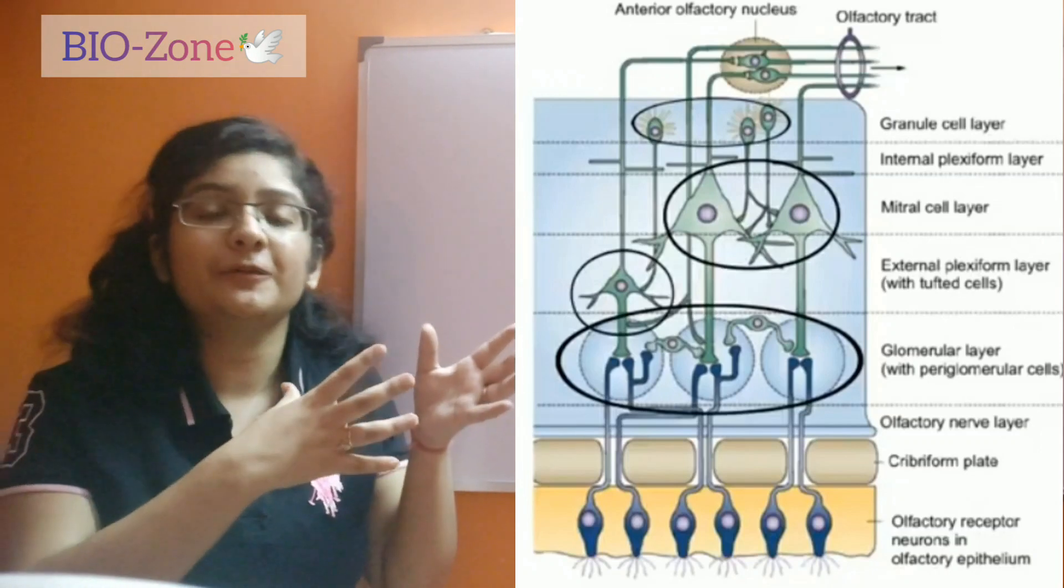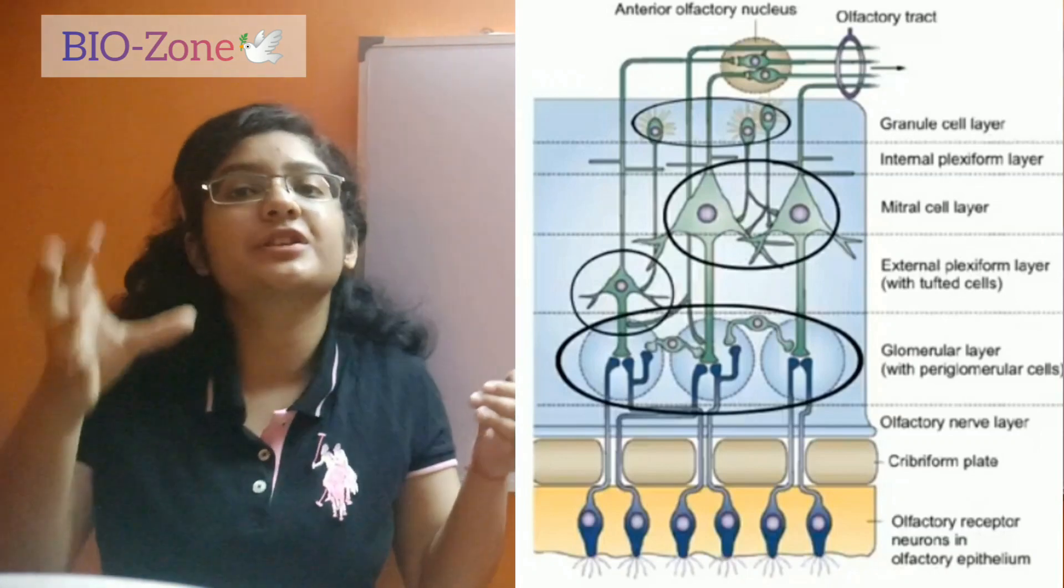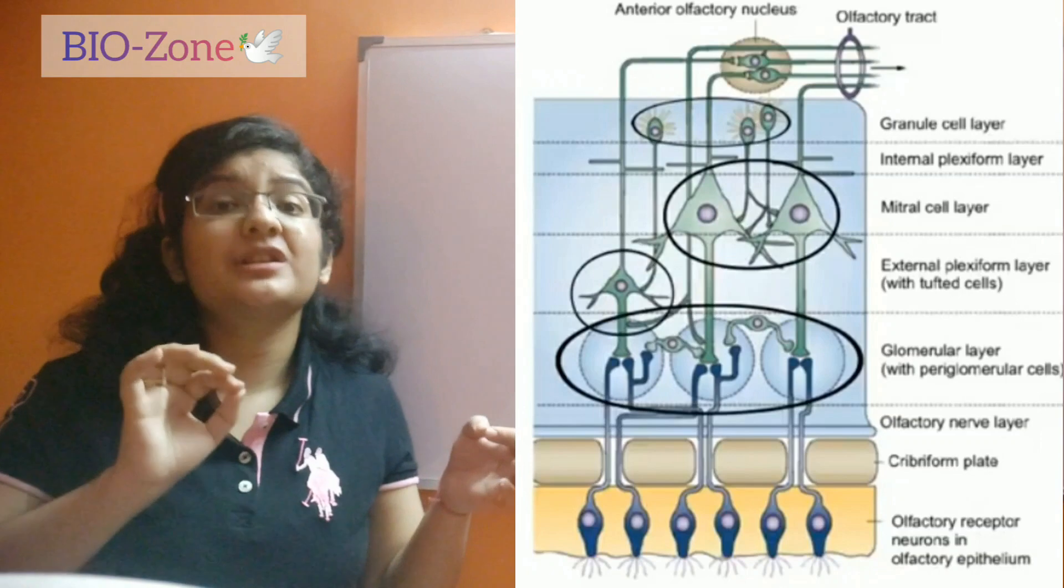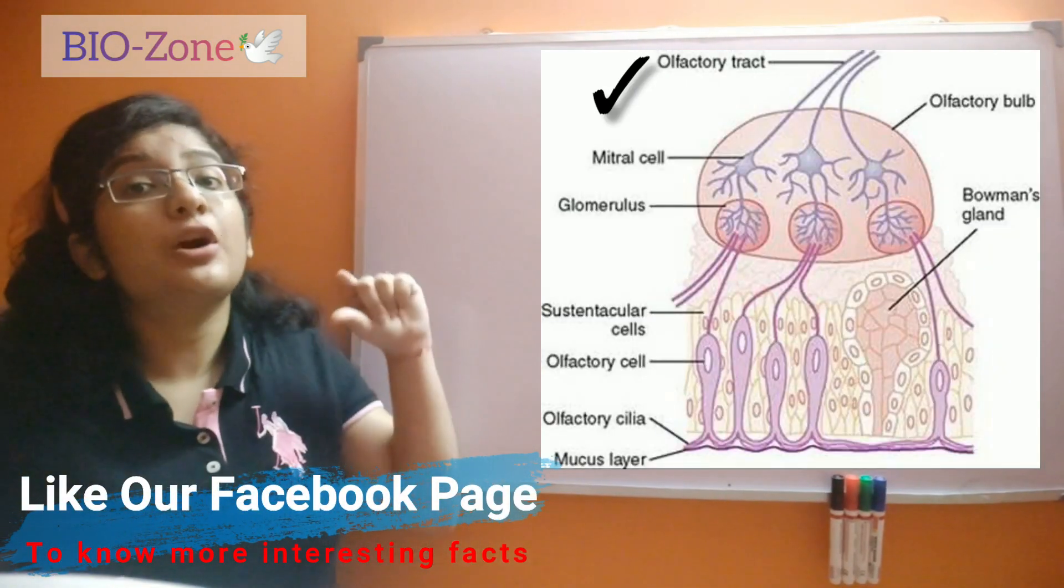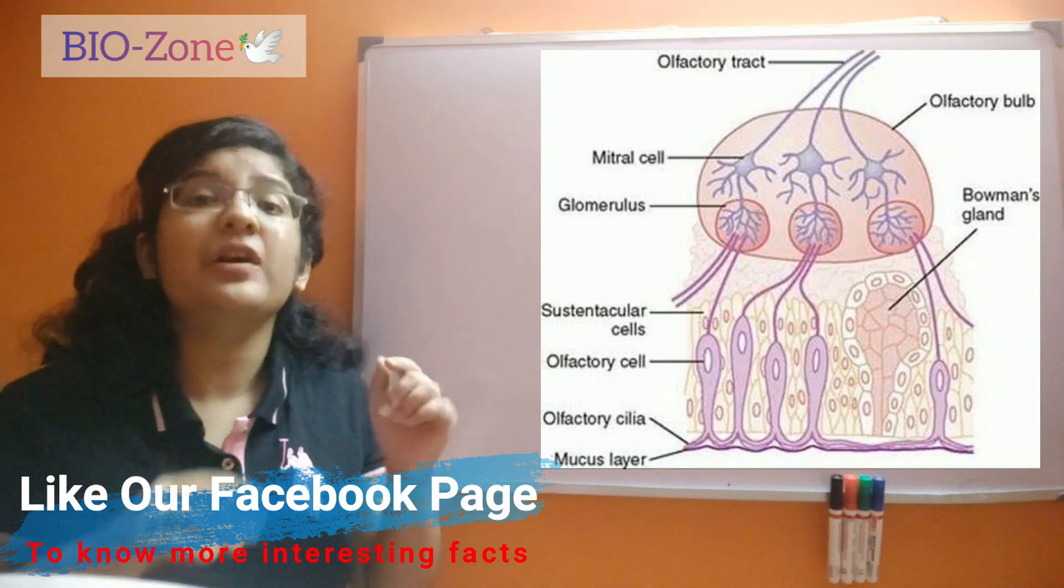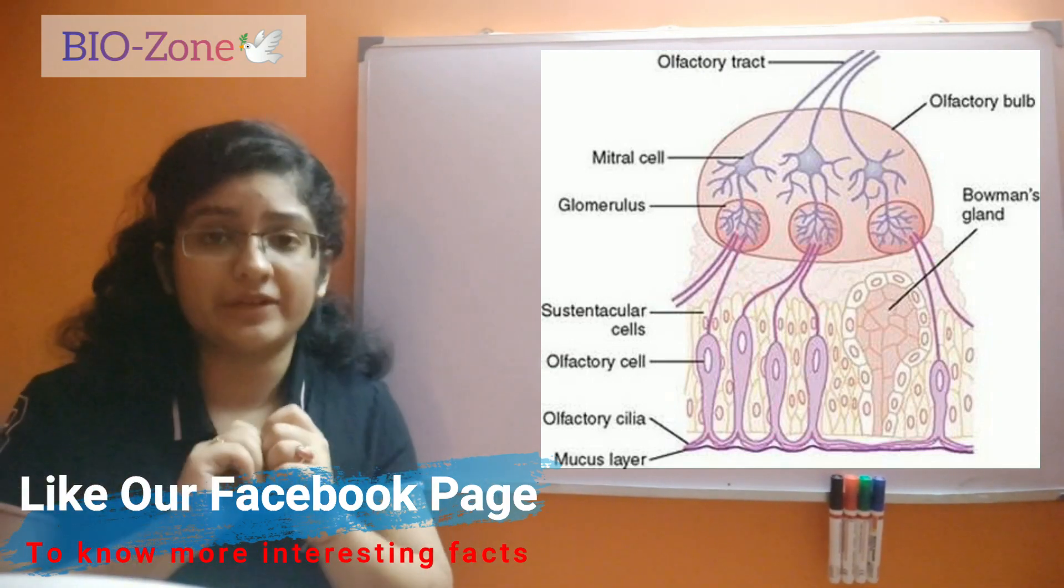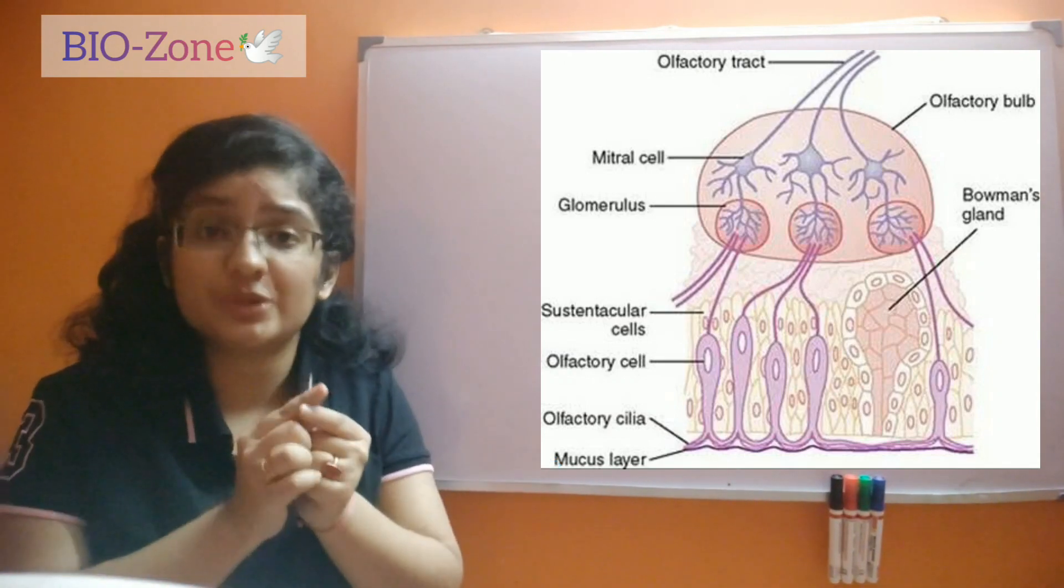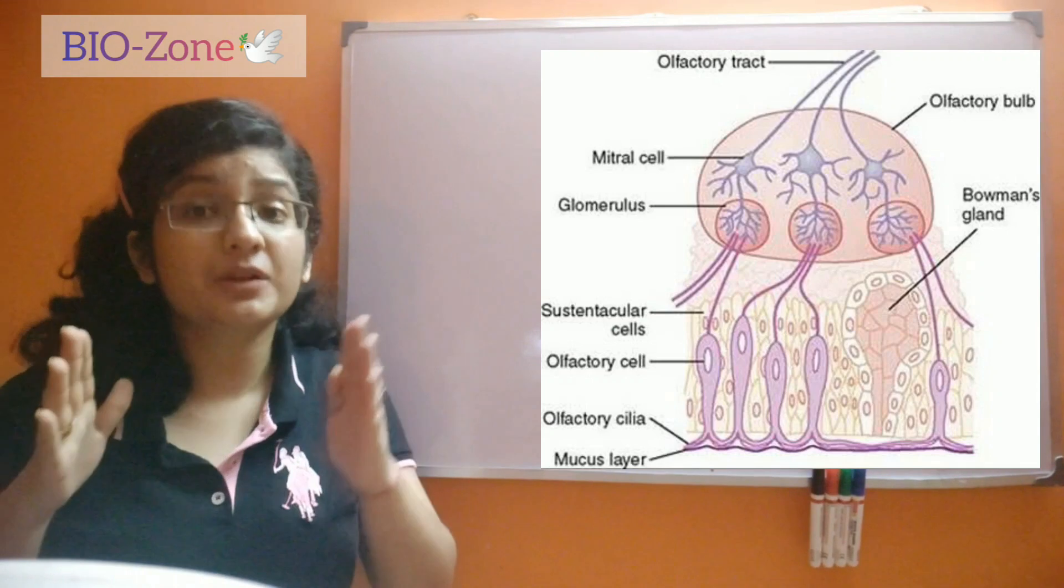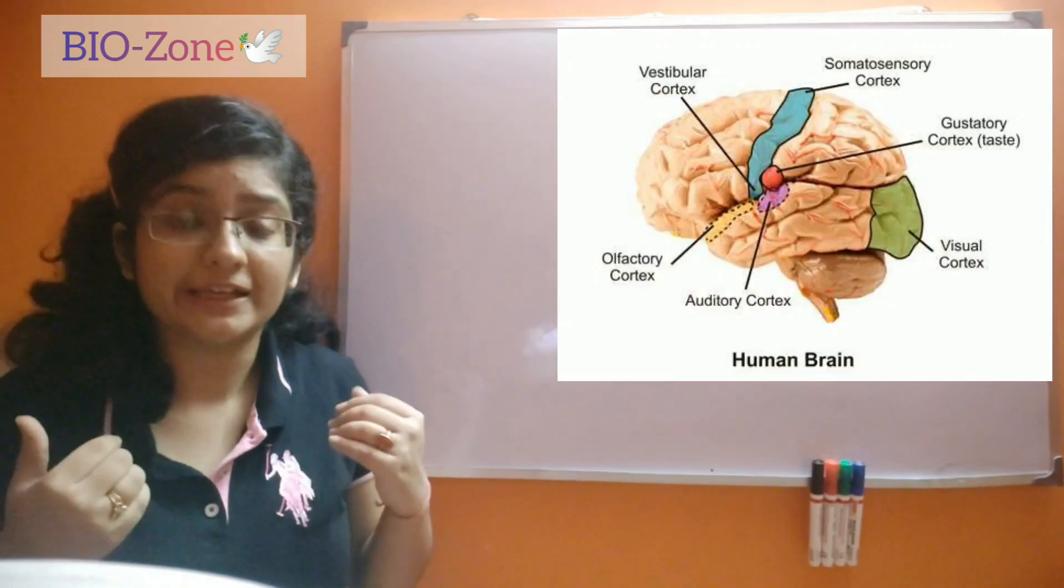And after the information goes to the next set of cells, the olfactory potential generates, which is then passed through the olfactory tract. Now the olfactory tract has lots and lots of neurons from the mitral cell and the tufted cell. These neural cells form the olfactory tract, which will then go to the olfactory cortex of our brain.